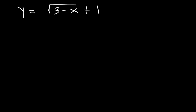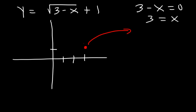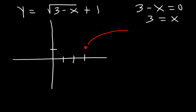Let's graph the square root of 3 minus x plus 1. Setting the inside equal to 0 gives x equals 3, so it shifts 3 units to the right and up 1 due to the plus 1. We have a negative sign in front of x and a positive sign next to y — so x goes left and y goes up, towards quadrant 2.